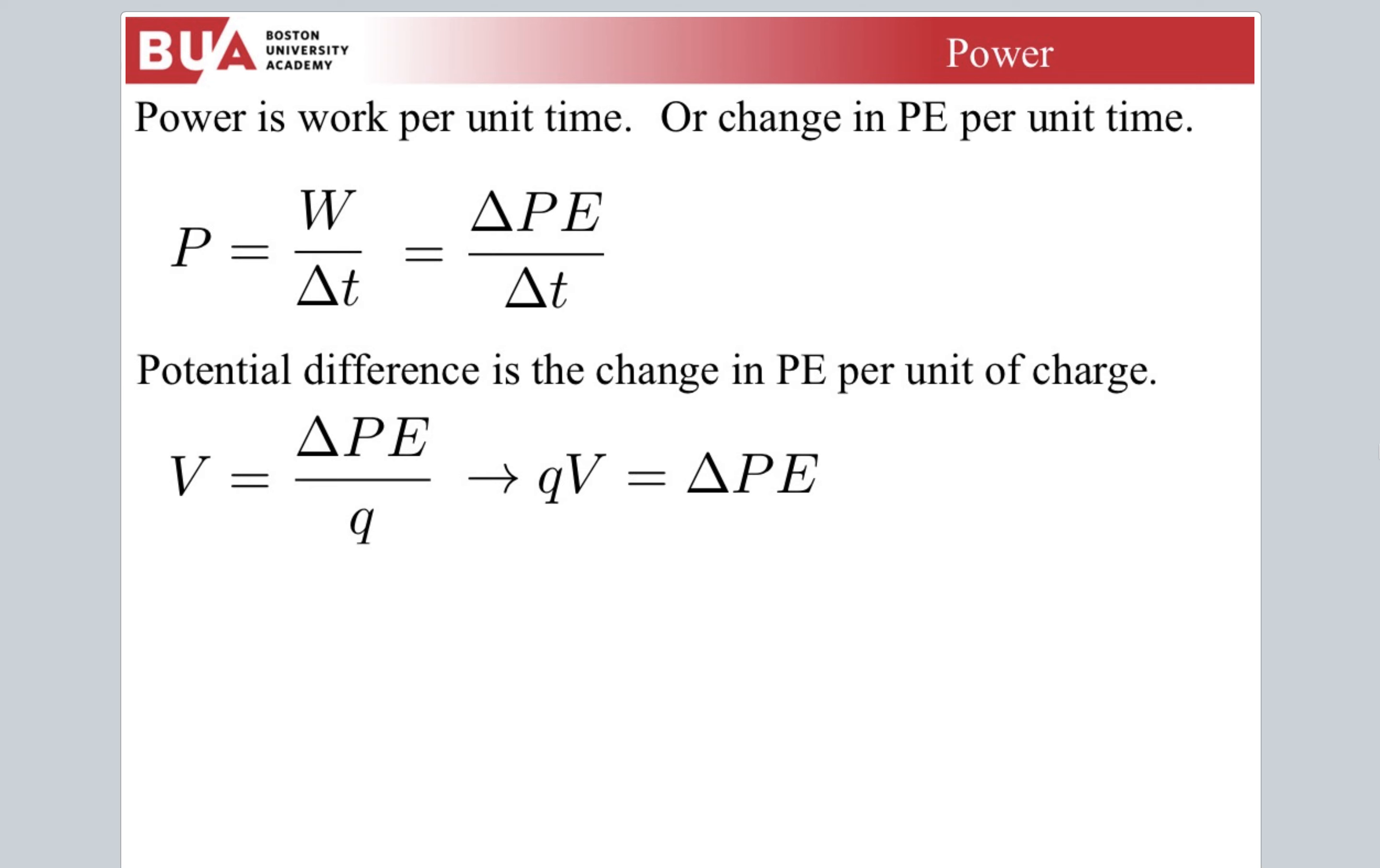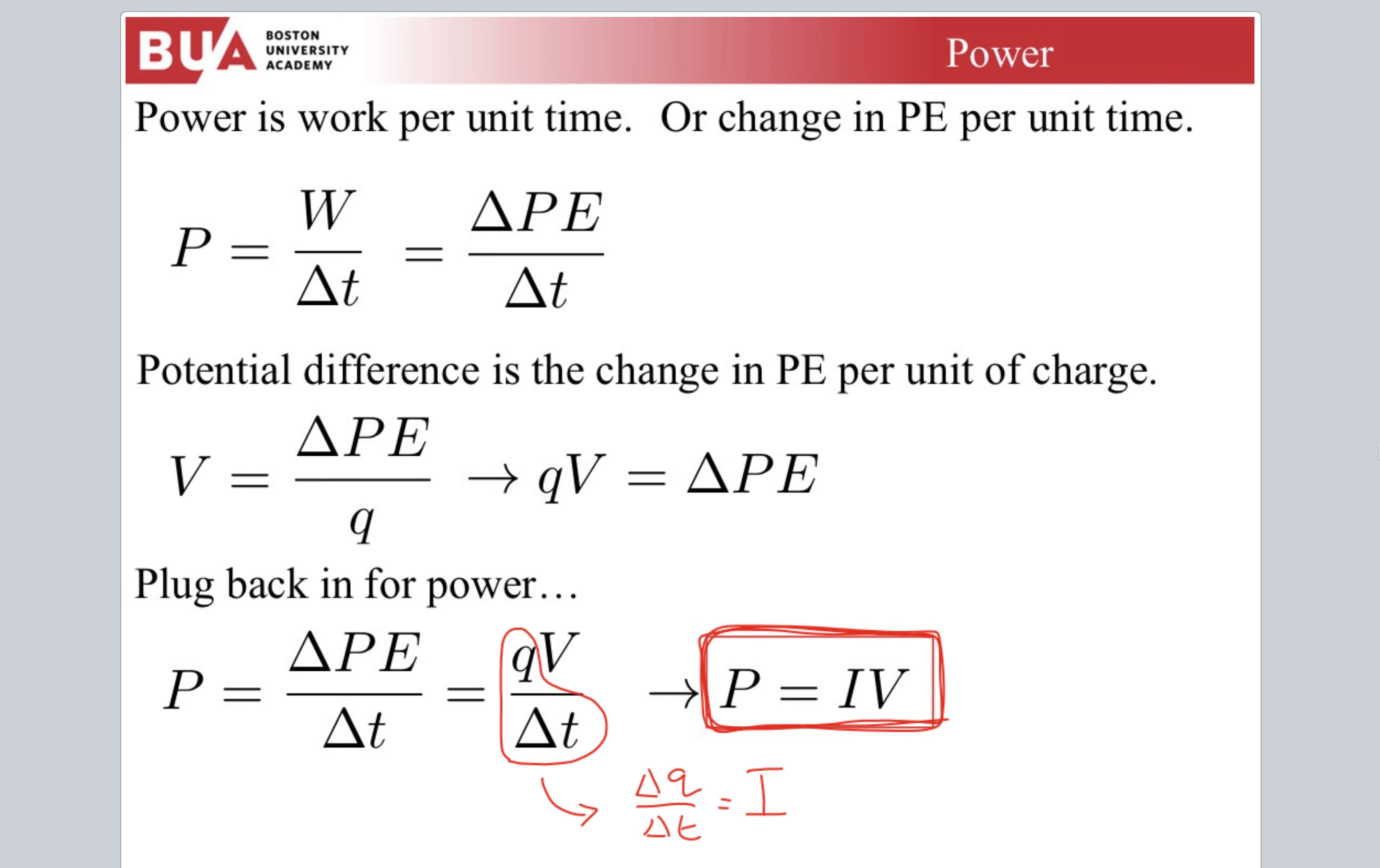We have power as change in potential energy per unit time. We have to remember that the definition of voltage is just change in potential energy per charge. We get this relation, QV equals change in potential energy. We can replace that. We get change in potential energy over time is QV over delta T. If we look at this, that is just delta Q over delta T, which is current. We get the very simple formula that power is current times voltage. Very important formula.